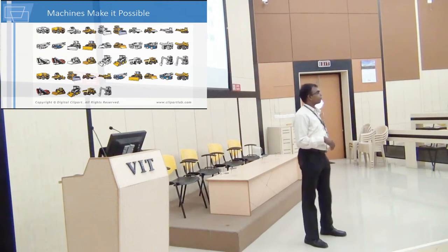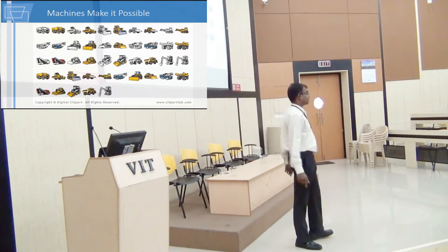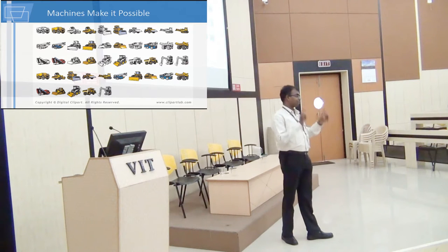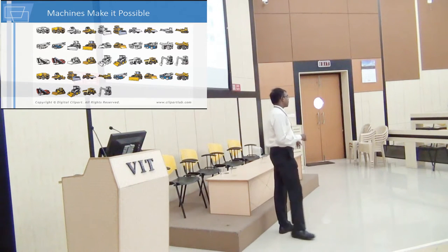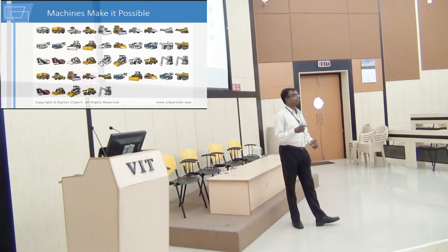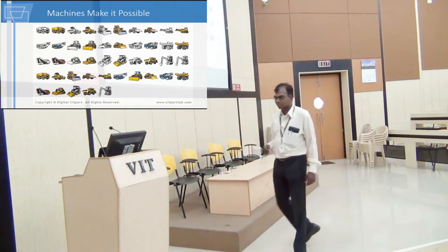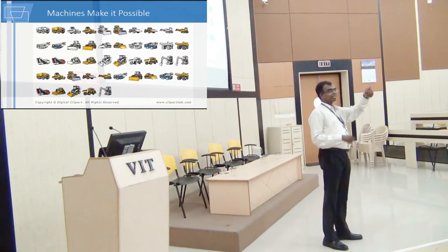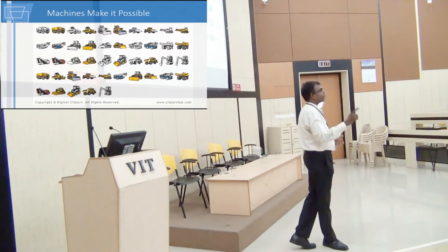In a previous semester's question paper, I had taken a photograph from The Hindu about an actual accident which took place because of movement — though it was not a crane failure, it was a launching girder failure. In any case, this is a crane, a lifting equipment. What are the other kinds of construction equipment you see here?